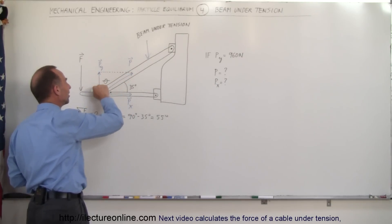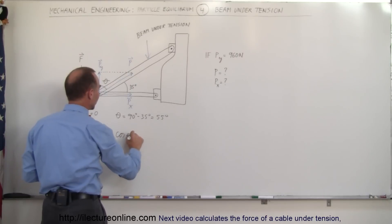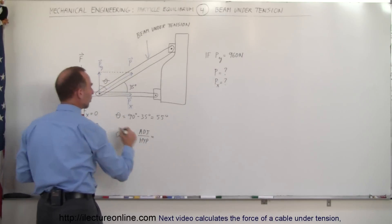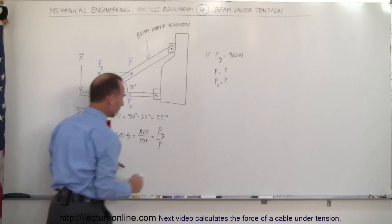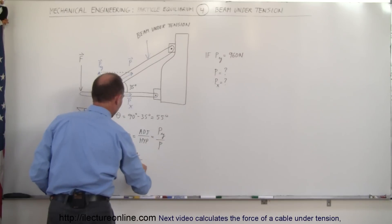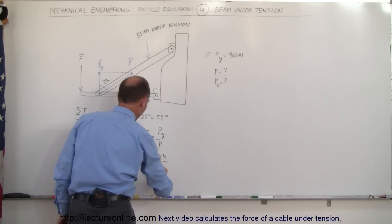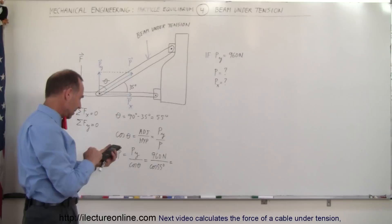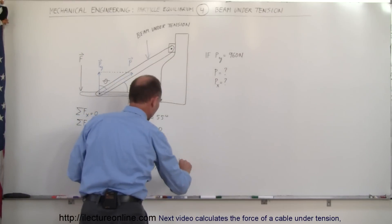Now we have this triangle right here. P forms the hypotenuse, this forms the adjacent side to that angle. So by definition, the cosine of theta equals the adjacent side divided by the hypotenuse. In this case, the adjacent side would be P sub y and the hypotenuse would be the force P. Since we're looking for P, that means P equals P sub y divided by the cosine of theta. So P sub y being 960 newtons divided by the cosine of 55 degrees equals 1,674 newtons.